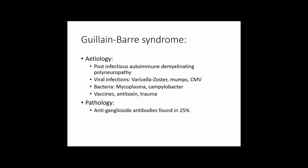Moving on to Guillain-Barré syndrome (GBS): it is another autoimmune demyelinating condition, more common in males than females, affecting about 1 per 100,000 per year. It is essentially a post-infectious autoimmune demyelinating polyneuropathy. Triggers include infections with varicella zoster, mumps, CMV, mycoplasma, and particularly Campylobacter — a patient with diarrhea or gastrointestinal symptoms presenting with GBS features is characteristic for exam purposes. It is also associated with vaccines, antitoxins, and trauma. GBS is associated with production of anti-ganglioside antibodies.